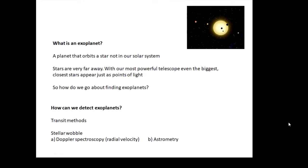So how do we go about finding exoplanets? Well, there are three ways that we need to know. First of all, transit methods—we talked about the transit of Venus in another video—and then looking at stellar wobble. There are two ways we can look at stars wobbling: one is to look at their radial velocity using Doppler spectroscopy, and the other one is astrometry.